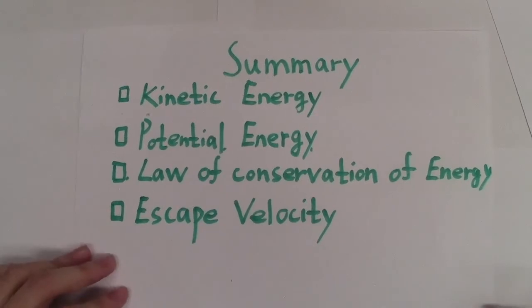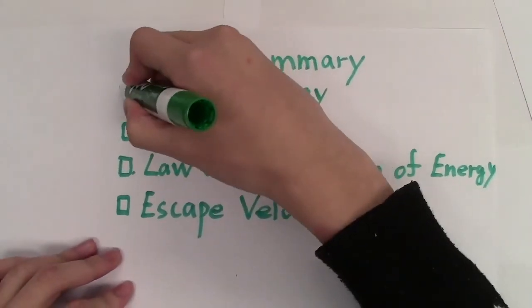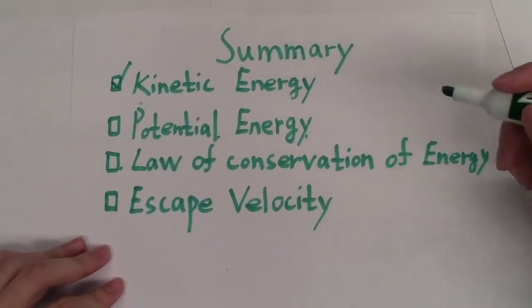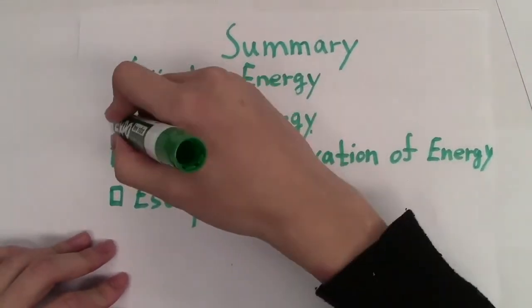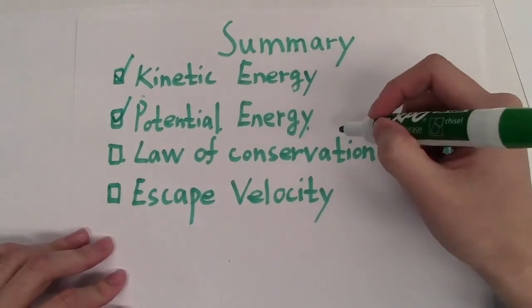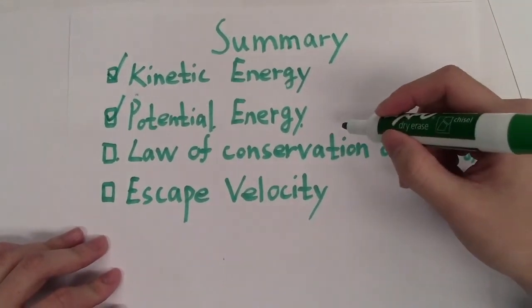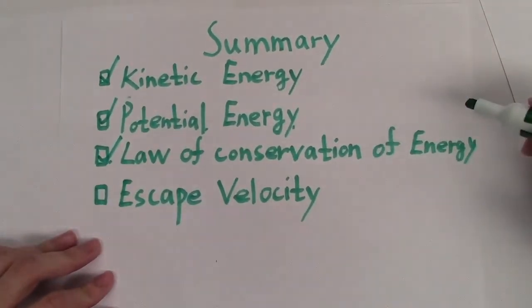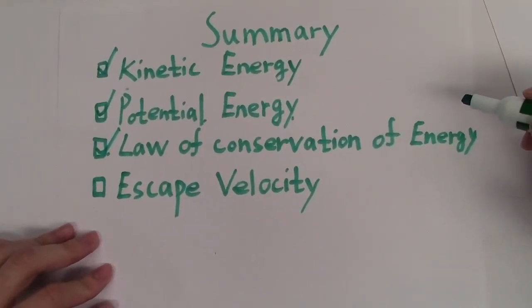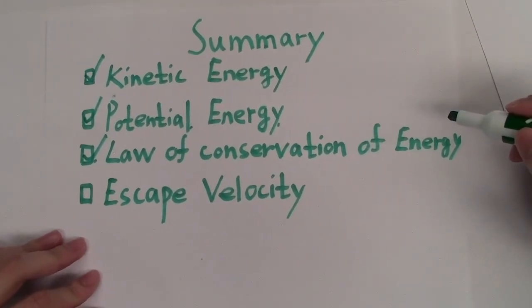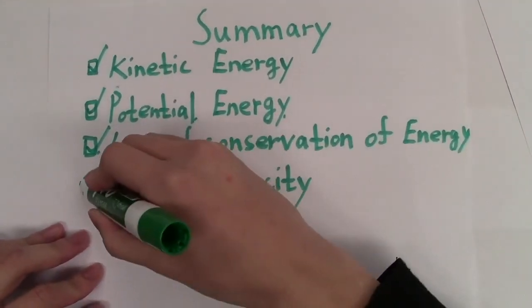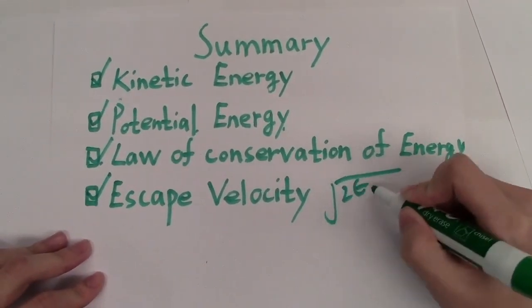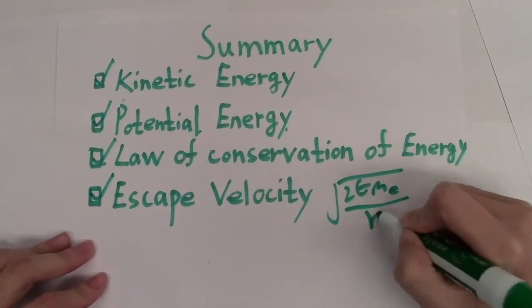So let's summarize what we have learned. First, kinetic energy. This is a type of energy that depends on the mass of the object and the speed of the object. Second, potential energy, which is a type of energy that is always negative and depends on the distance from the Earth. And also, the law of conservation of energy, which states that a system's total energy will always be the same. And finally, the escape velocity. We have derived a formula for it, which is square root of 2GMₑ divided by rₑ.